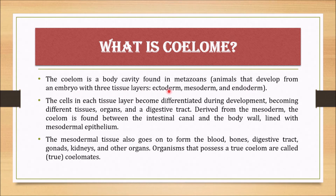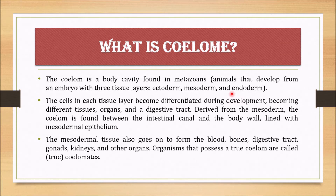The three tissue layers are ectoderm, mesoderm, and endoderm. The ectoderm is the outer layer of cells. The mesoderm is the middle layer. The endoderm is the innermost layer, lining the gut. These are the three germ layers of metazoans.